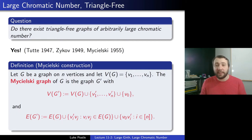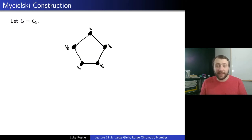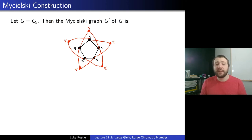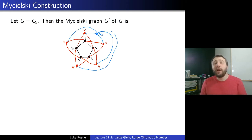We also put an edge from the special vertex v0 to all the vi primes. Here's an example: let G be C5 with vertices v1, v2, v3, v4, v5. In the Michelski graph, we make extra copies — think of the primes as twins of the originals but with no edges between them. So v1 prime is adjacent to v5 and v2, v2 prime is adjacent to v1 and v3, and so on. Then I add one last vertex v0, which is adjacent to all the primes. That's the Michelski construction.